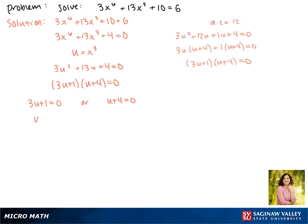Solving for u gives us u equals negative 1 third, and substituting x back in, we get x to the third equals negative 1 third. We take the cube root of both sides, and x equals the cube root of negative 1 third. We can take the cube root of a negative, so this is a solution.